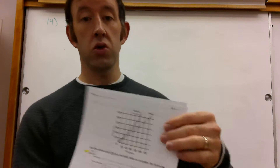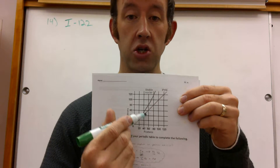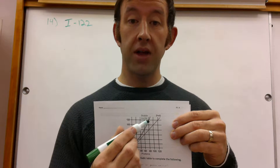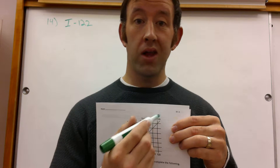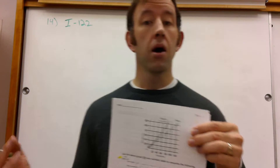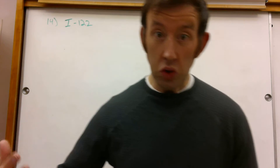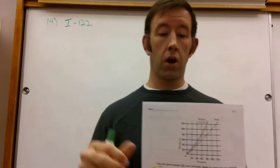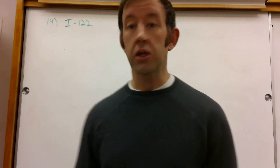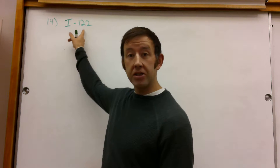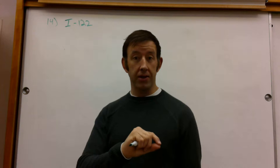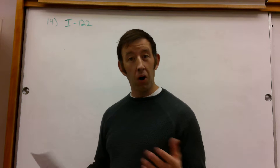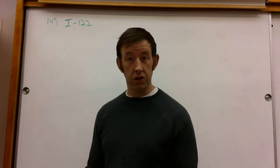Method number one: you can actually use a band of stability to try to determine where iodine-122 would plot on there. Is it going to be above that stable line, below it, or way out there somewhere? That tells you, usually, what type of decay it's going to undergo with the three types that we will worry about. Or you can compare the mass of this isotope to the average mass, and that will usually kind of get you into the same ballpark as to what type of decay to expect.